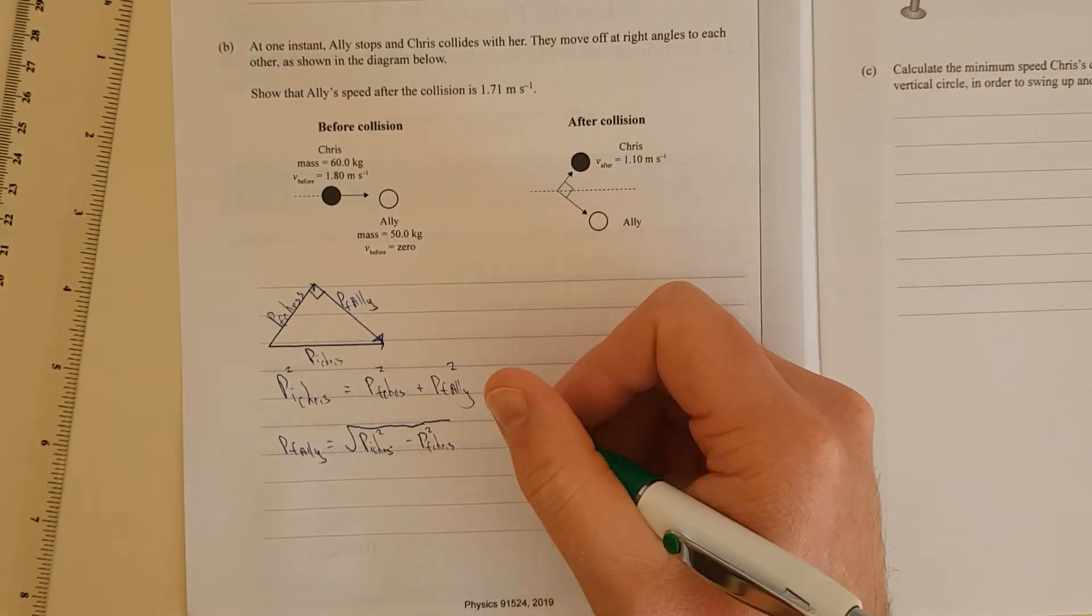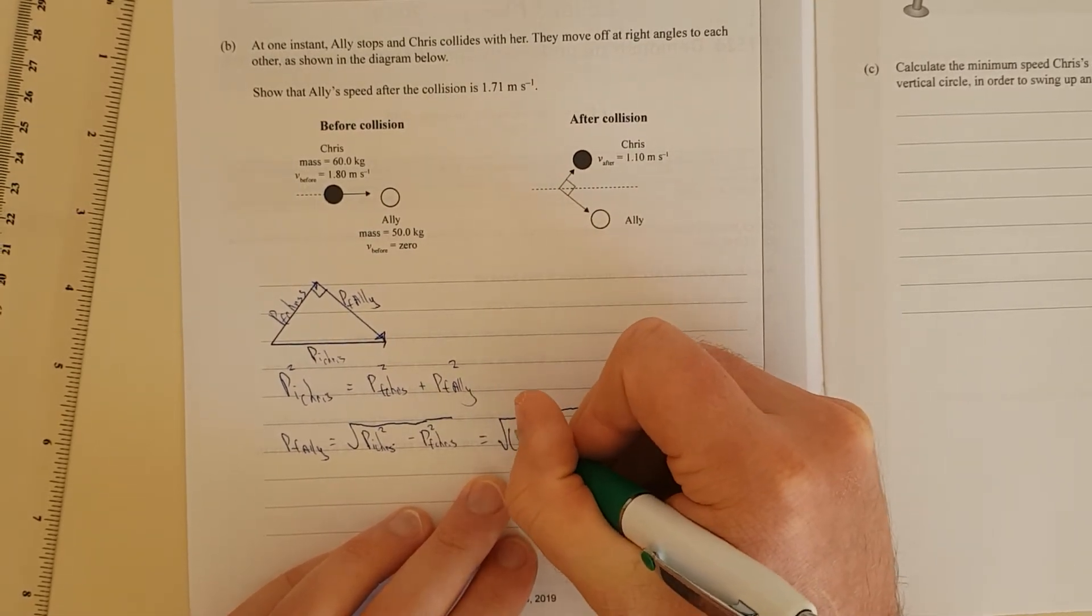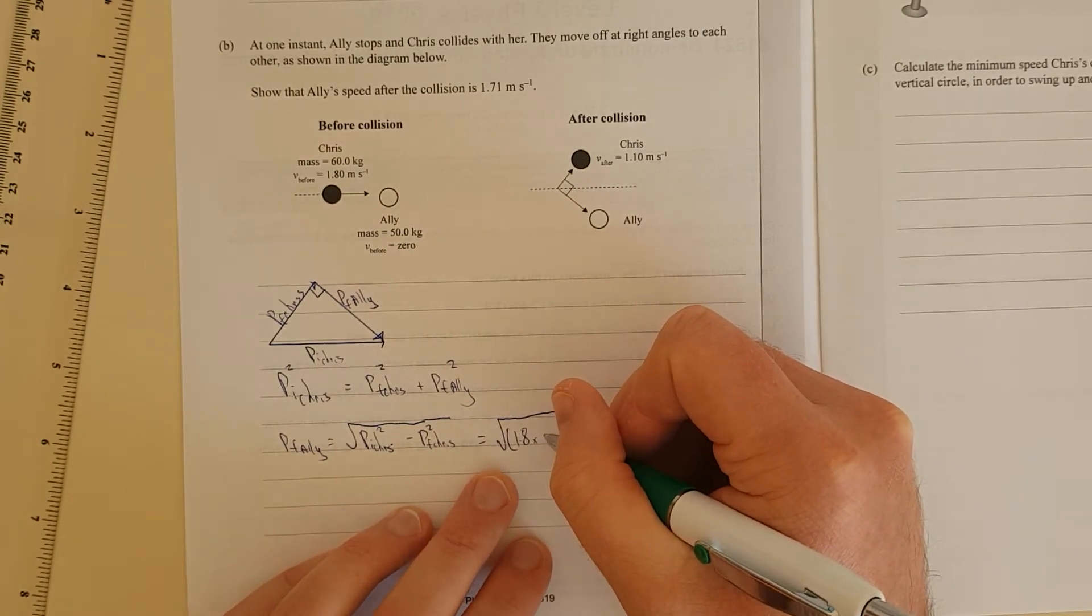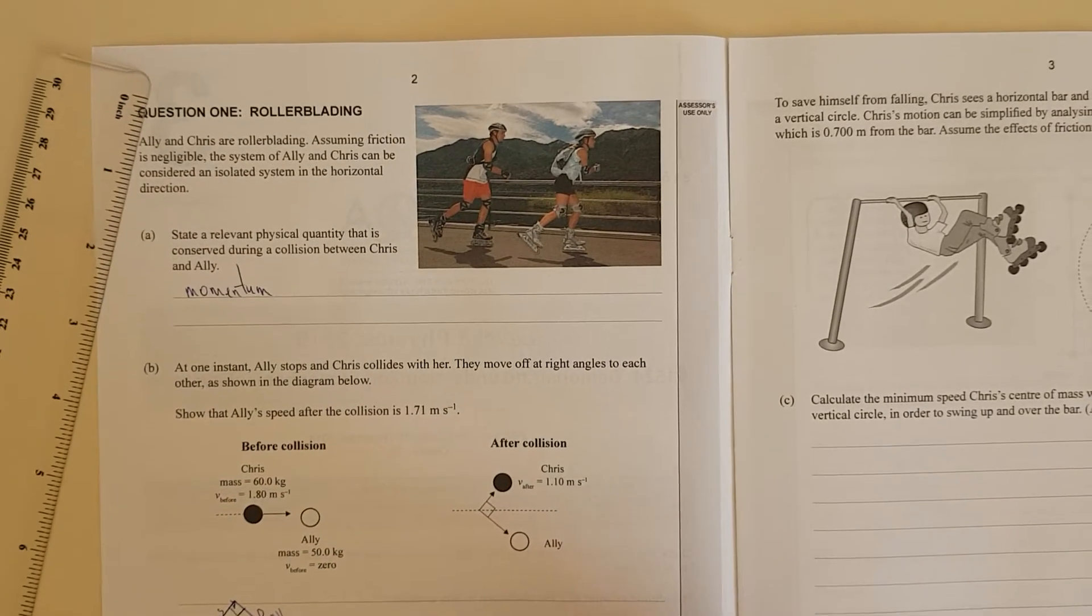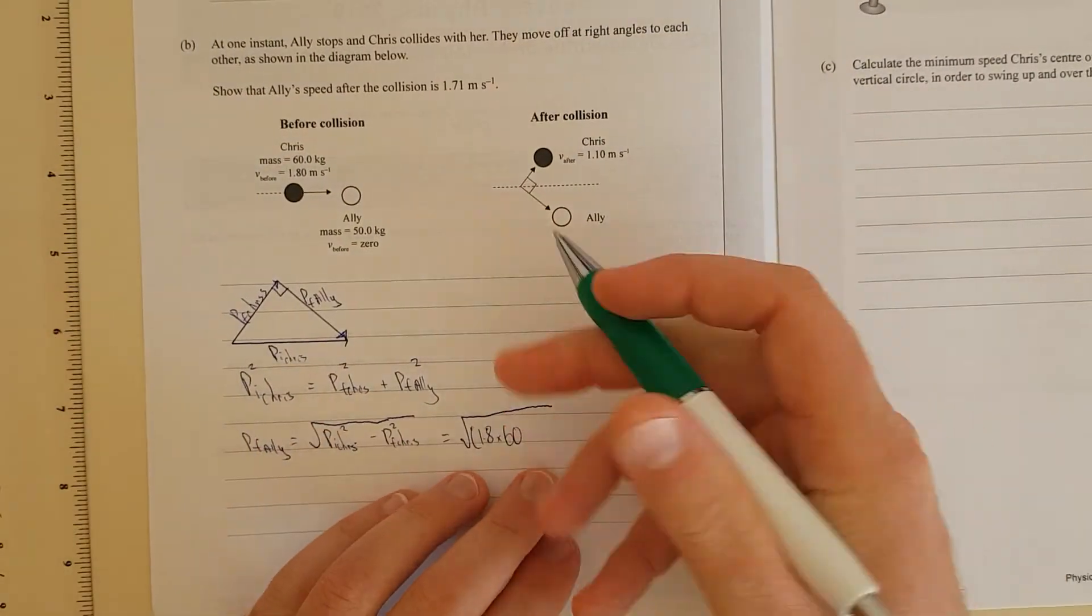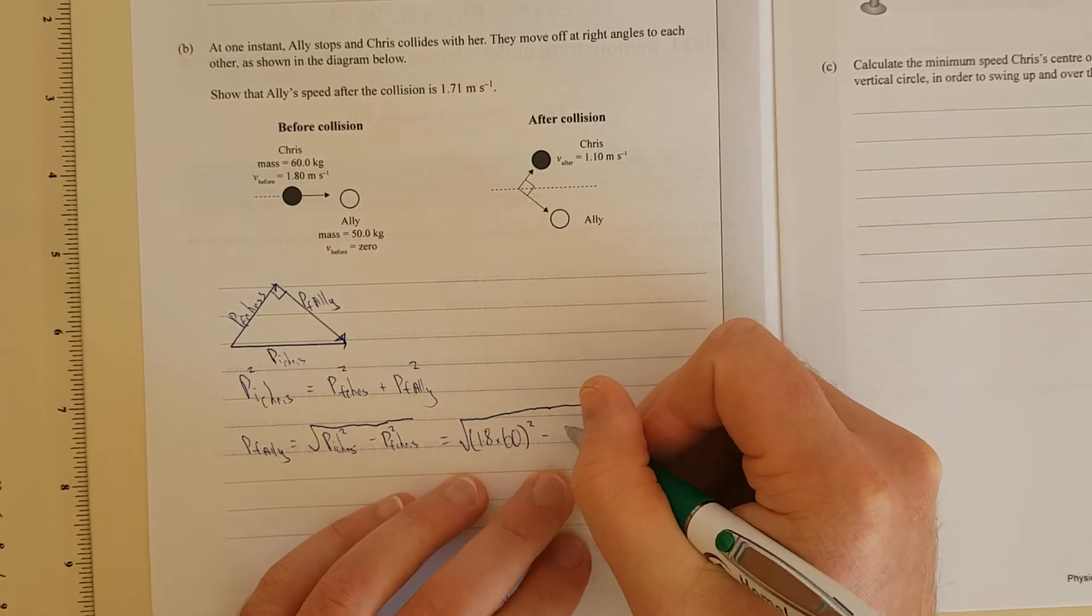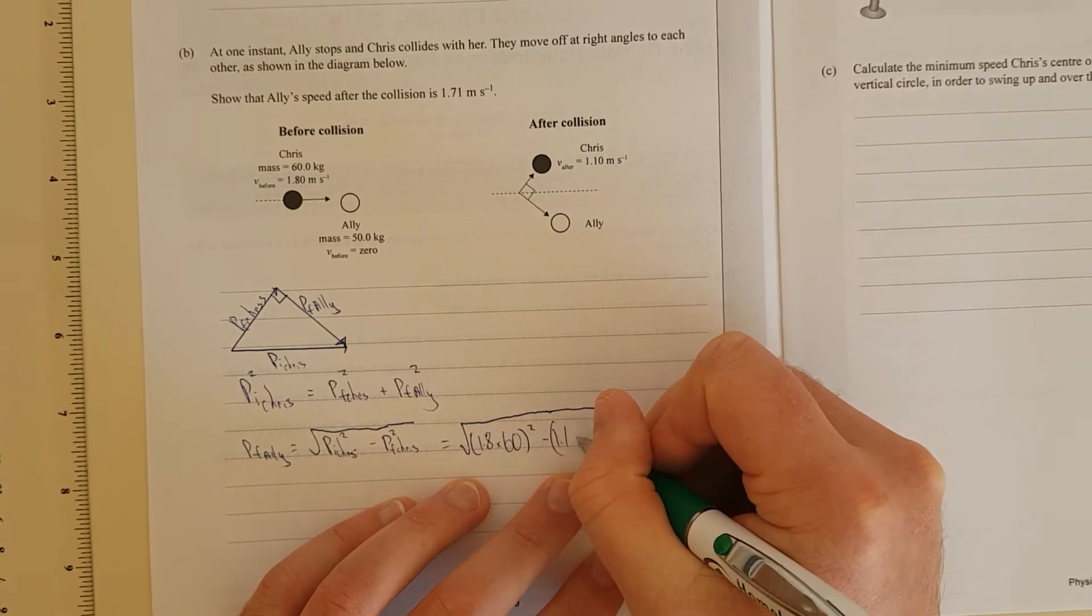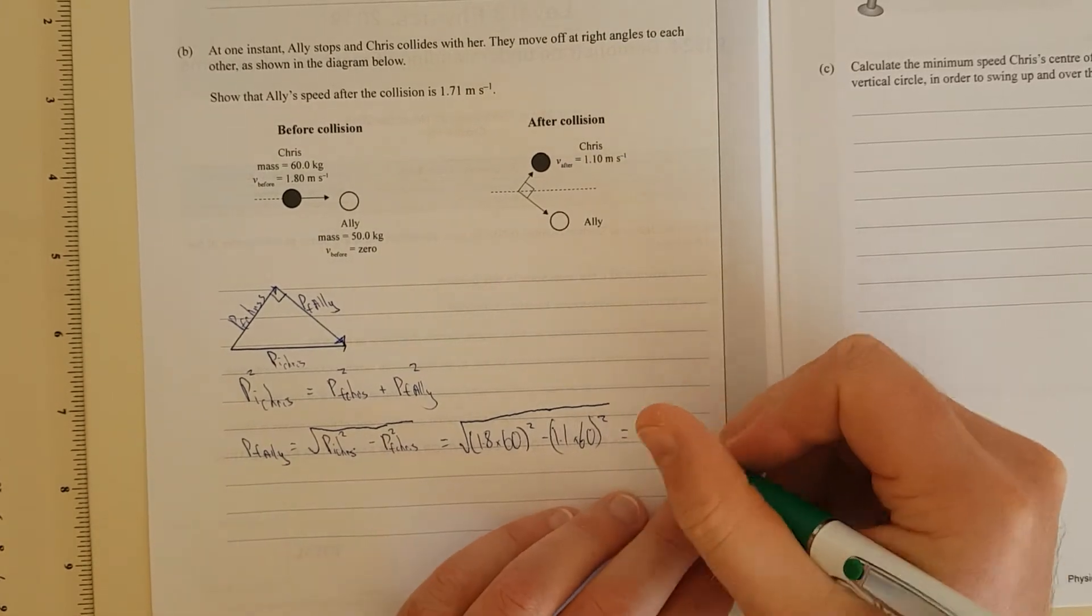All we need to do is substitute in the numbers. That equals square root of—initially Chris was going 1.8 meters per second, Chris is 60 kilograms—squared minus Ali, which is going to be 1.1 times 60 squared. And that is equal to 85.48 kilogram meters per second.